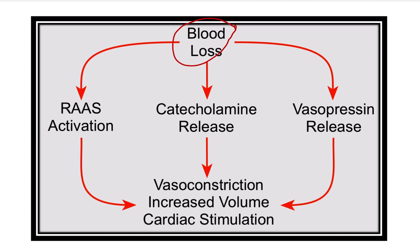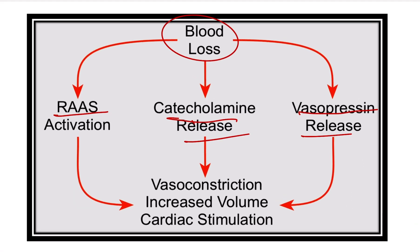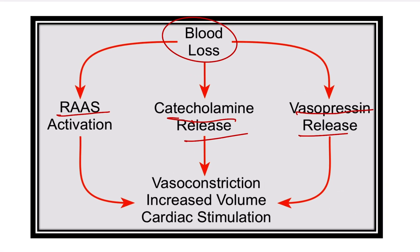When there is a big amount of blood loss, the RAAS — that means the renin-angiotensin-aldosterone system — is activated. Catecholamines are released, and vasopressin is also released, because the body wants to replenish volume or increase cardiac output with the small remaining volume of blood.